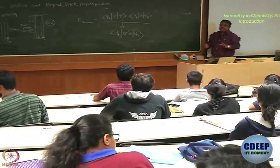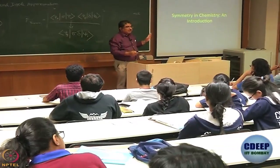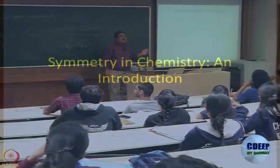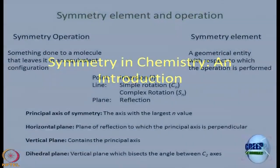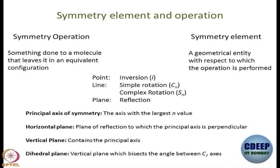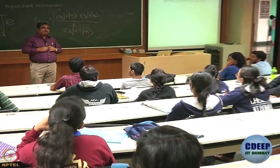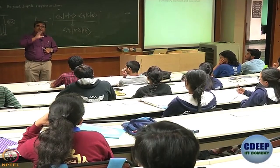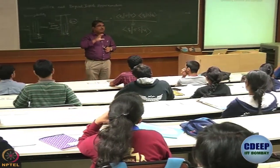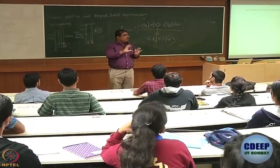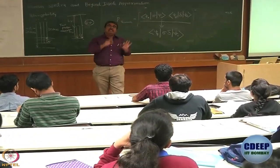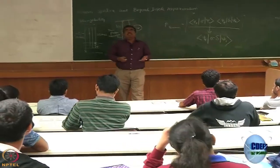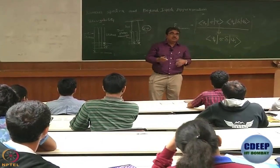A very quick recap of symmetry classification of molecules. Even in schools nowadays they talk about symmetry elements, so I believe all of us know what a symmetry element is and what a symmetry operation is. A symmetry operation is something that we do to a molecule which leaves it in an equivalent configuration — it looks the same, in very simple words. And a symmetry element is a geometric entity with respect to which the operation is performed. I find it easier to define the operation first, then go to the element.